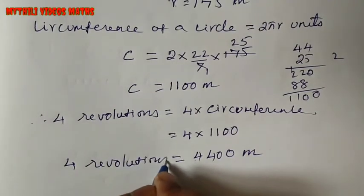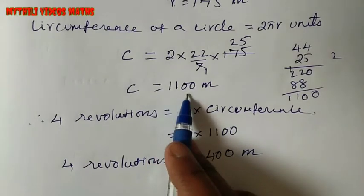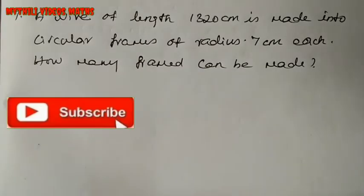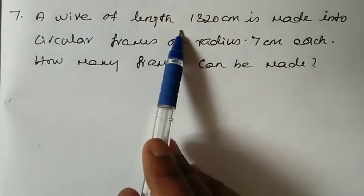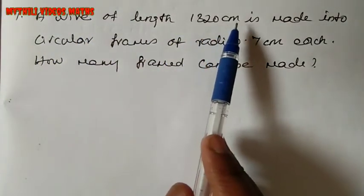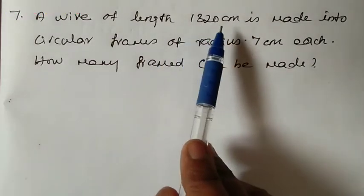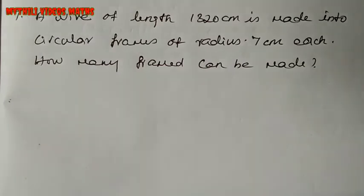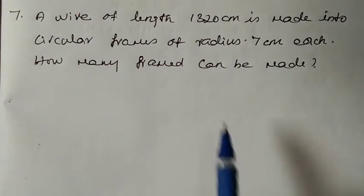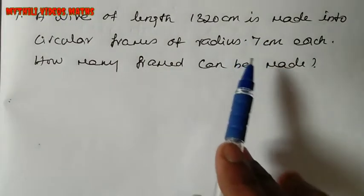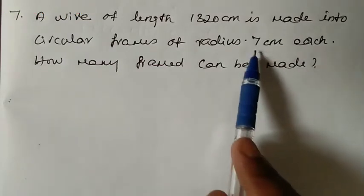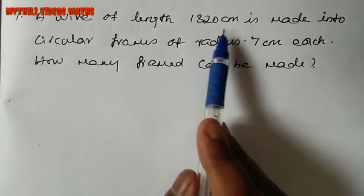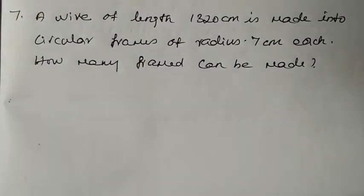Now the next — 7th sum. A wire of length 1320 cm has been made into circular frames of radius 7 cm. Find how many frames can be made. So using a radius of 7 cm, with a total wire of 1320 cm, we need to find how many circular frames can be made.